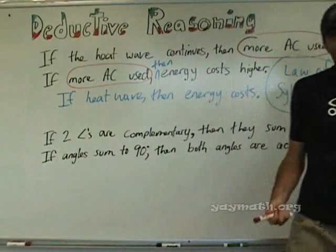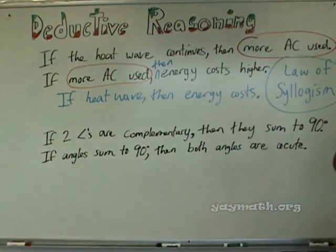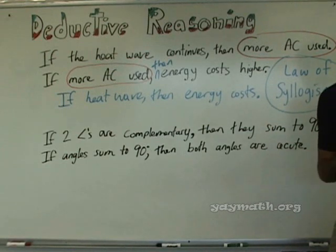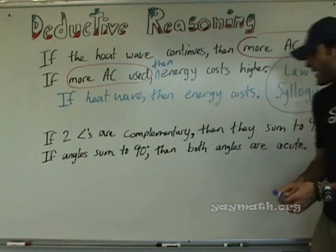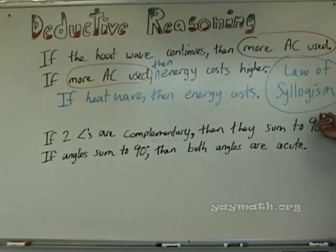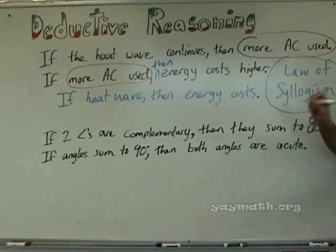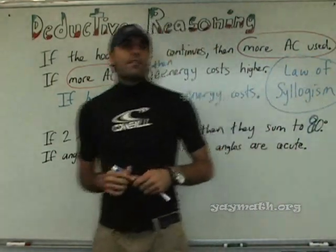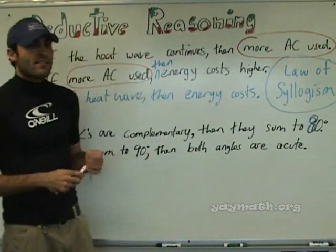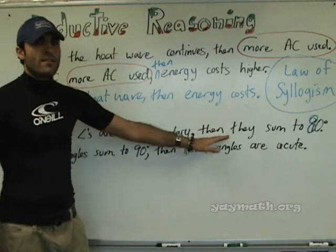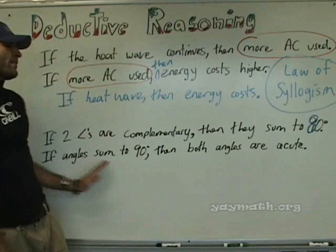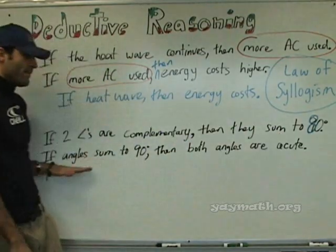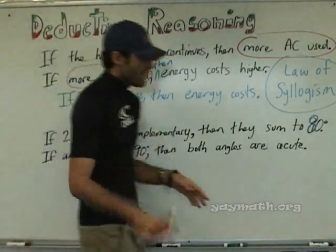Think about it — if two angles add up to 90 degrees, won't they both be acute? 50 and 40, 60 and 30, for example. What if I changed it to sum to 80 — can we do law of syllogism anymore? No, because this part of the rule has to be the same as this part of the rule for it to work. So that's law of syllogism.